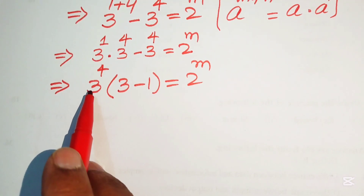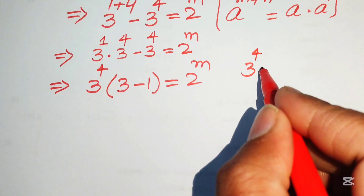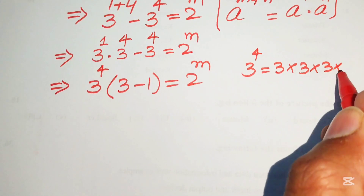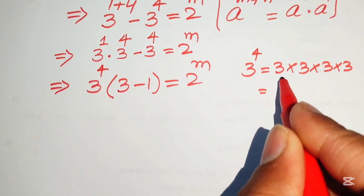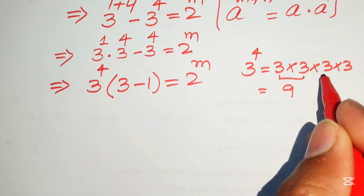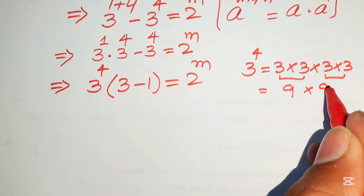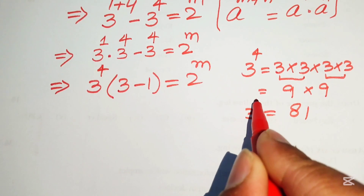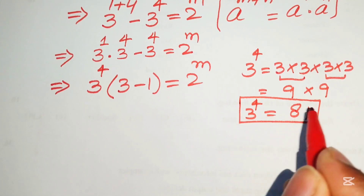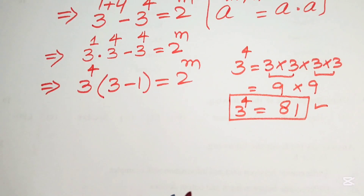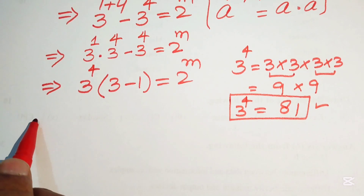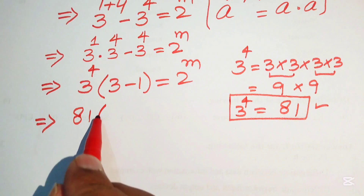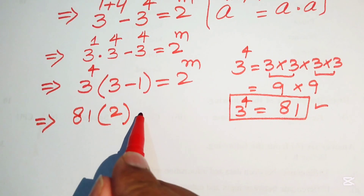Now we need to expand 3^4, which means multiplying 3 four times. 3 times 3 is 9, and 9 times 9 is 81. So 3^4 equals 81. We replace 3^4 with 81, giving us 81 times (3 minus 1) equals 2^m.